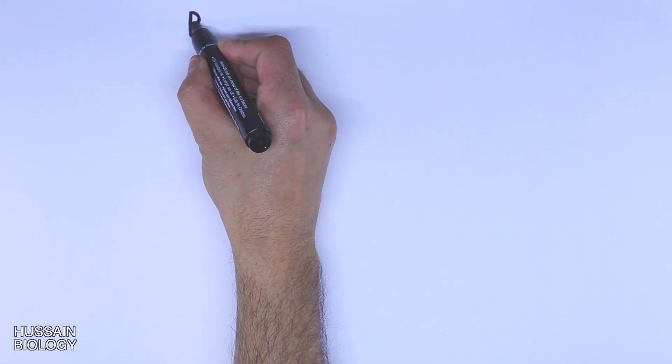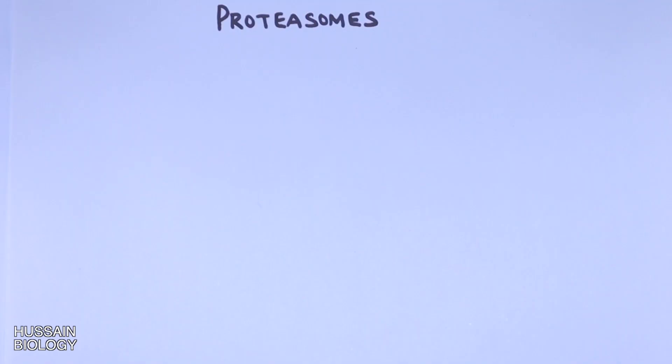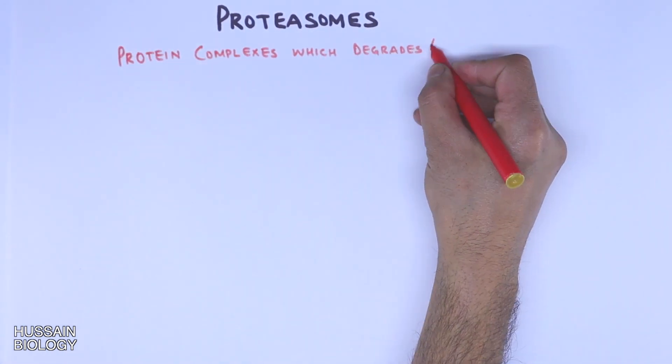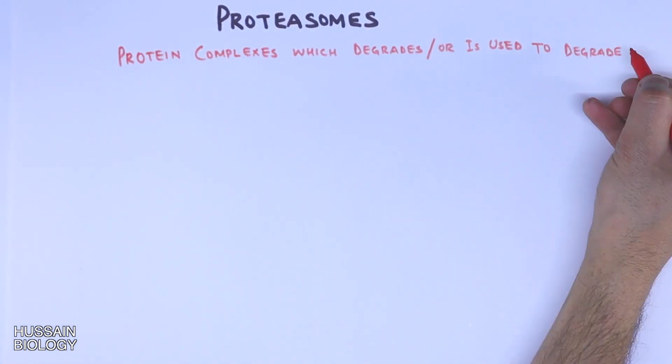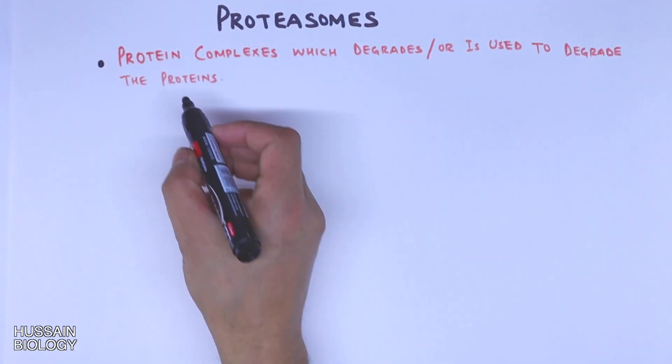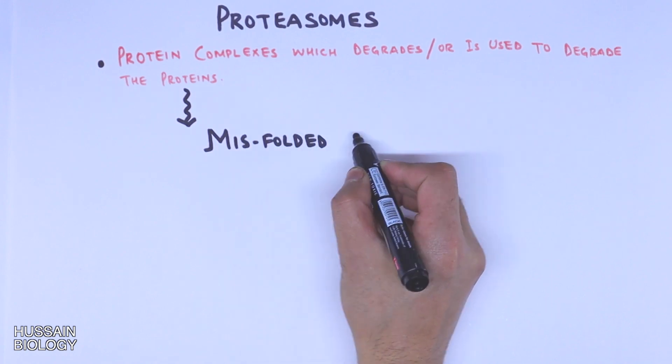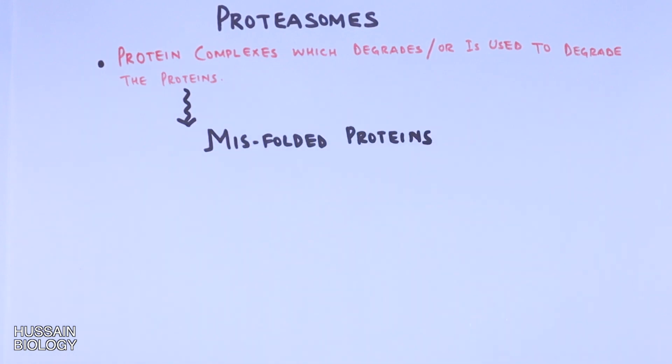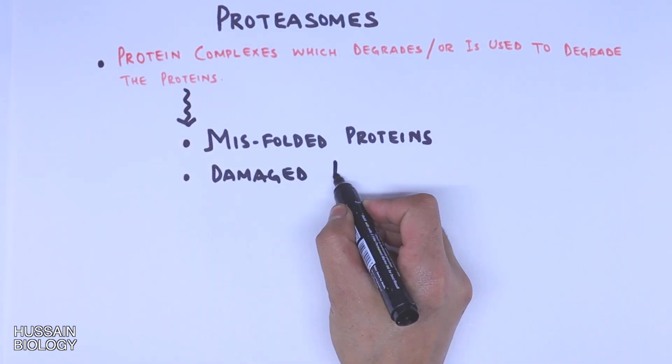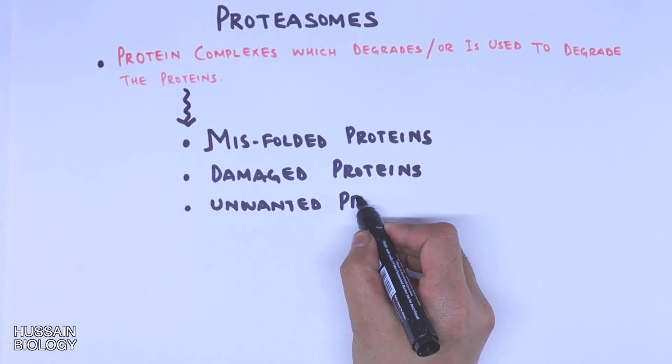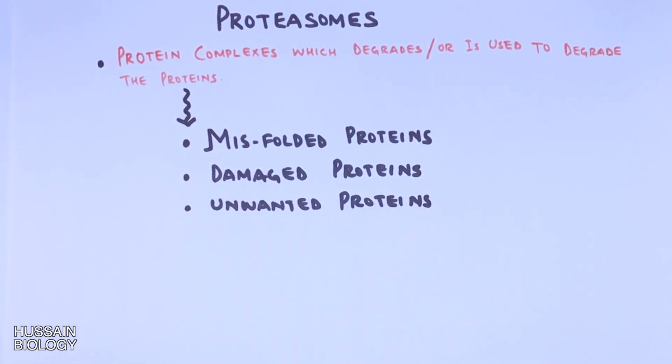In this video we'll be discussing about the proteasomes, its types and the structural differences. The proteasomes are complex protein molecules which degrade proteins. What kind of proteins? They're used to degrade misfolded proteins which fail folding in chaperone machinery, damaged proteins, and also to get rid of unwanted proteins from the cell at specific times.